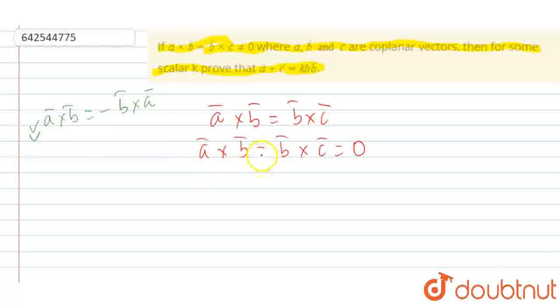So, this can also be written as a cross b vector plus c cross b vector which is equal to 0. That implies a vector plus c vector cross b vector is equal to 0.